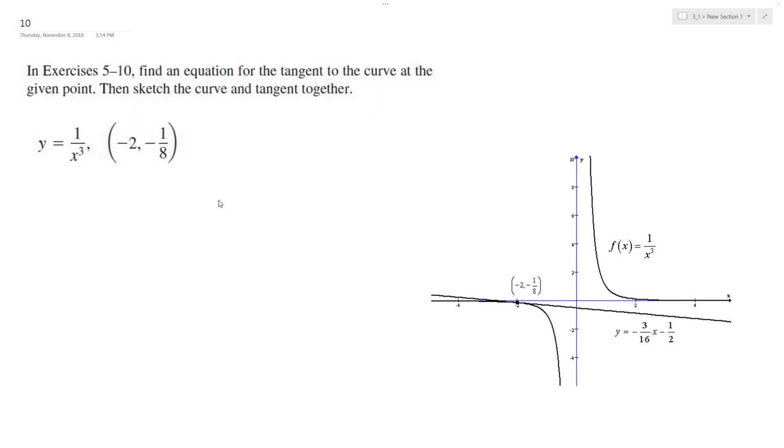All right, so we want to find the slope of the tangent line of 1 over x cubed at the point negative 2 comma negative 1 eighth. And it's already drawn right here, but I'm going to show you how it's found.